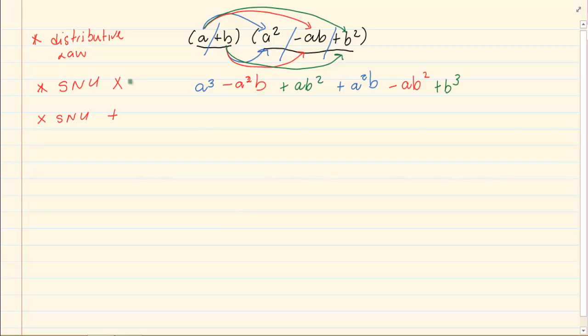Now, after we have done signs, numbers, unknowns multiplication, we need to look at what is the same. Which terms are the same? a squared b and a squared b. When you are using unknowns, it is a good idea or it is in your best interest to always write it in alphabetical order. Because when you write it in alphabetical order, it is easier to see where they are the same.